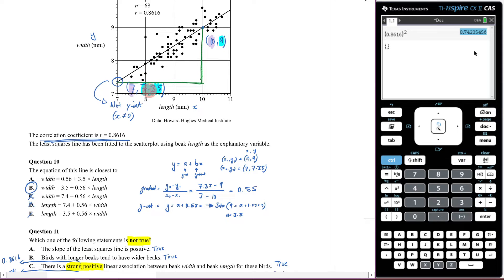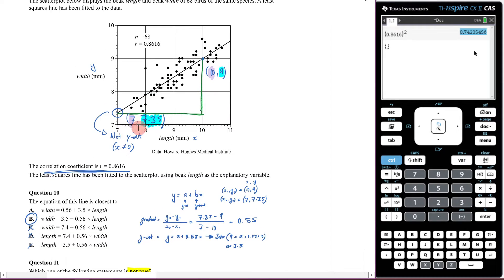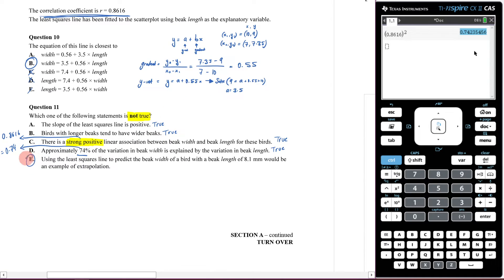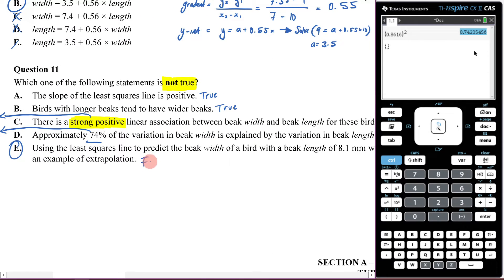This is not extrapolation, it is interpolation. Remember, extrapolation would be greater than 11 or lower than 7 - outside the data. This is interpolation because it's within the data set. So E is the correct answer because it's incorrect - it is false.